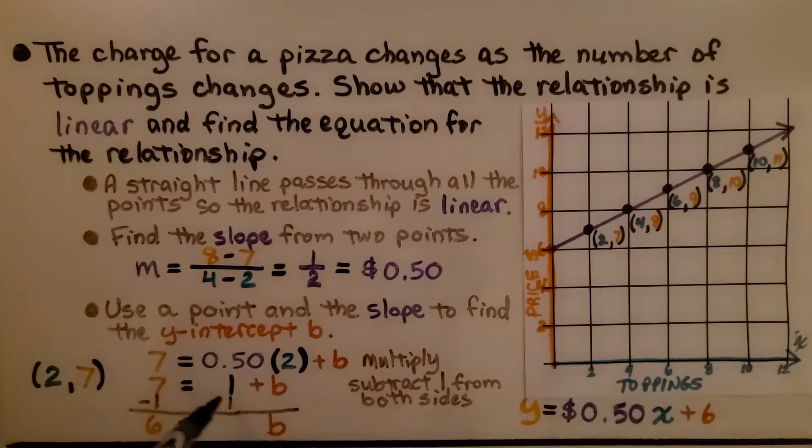We subtract this one dollar from both sides of the equation to solve it algebraically. And we get 6 equals b. This positive one and negative one makes a zero pair. So we're just left with 6 equals b. Now we can write our equation. We know what the y-intercept is, it's 6. We have y equals 50 cents x plus 6.